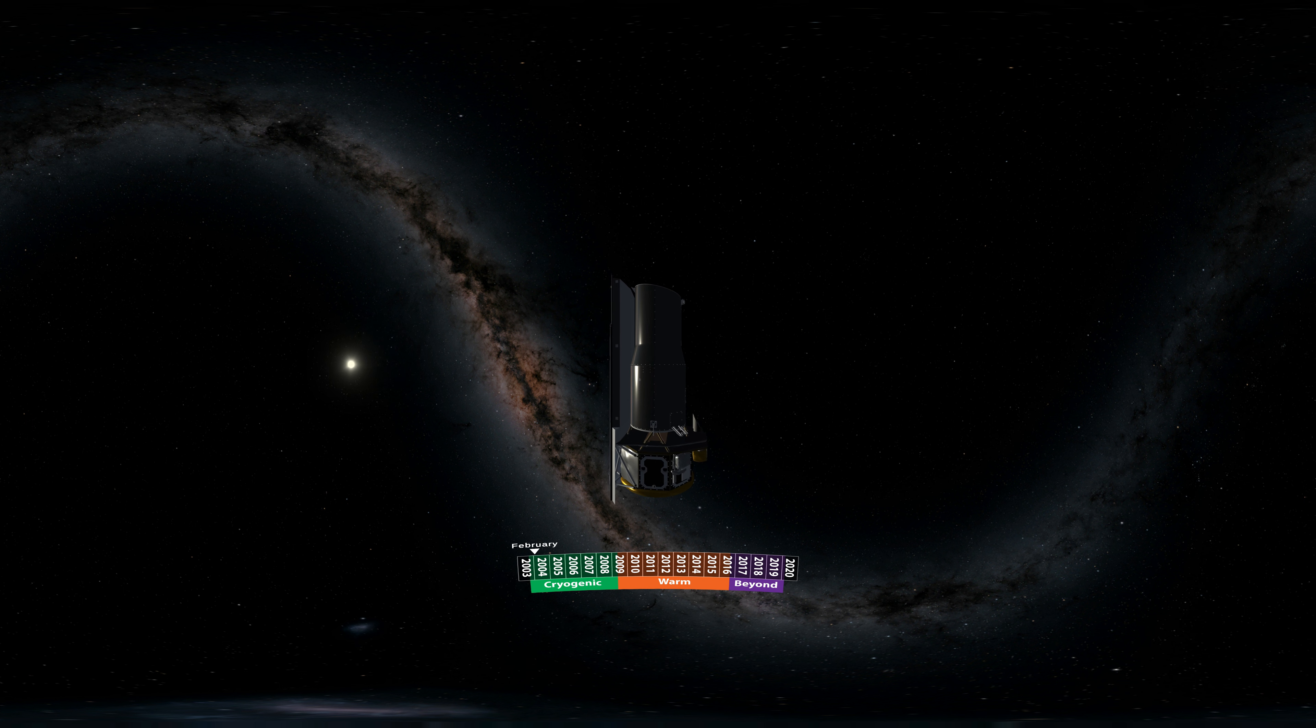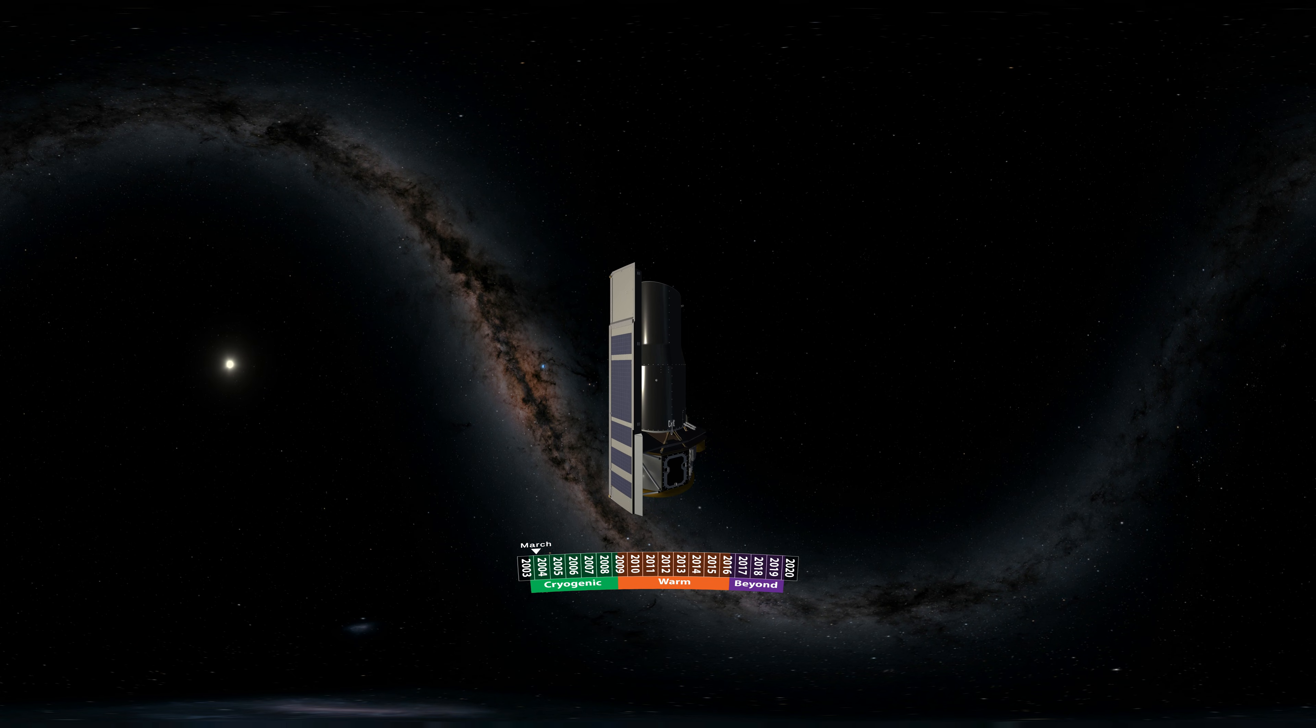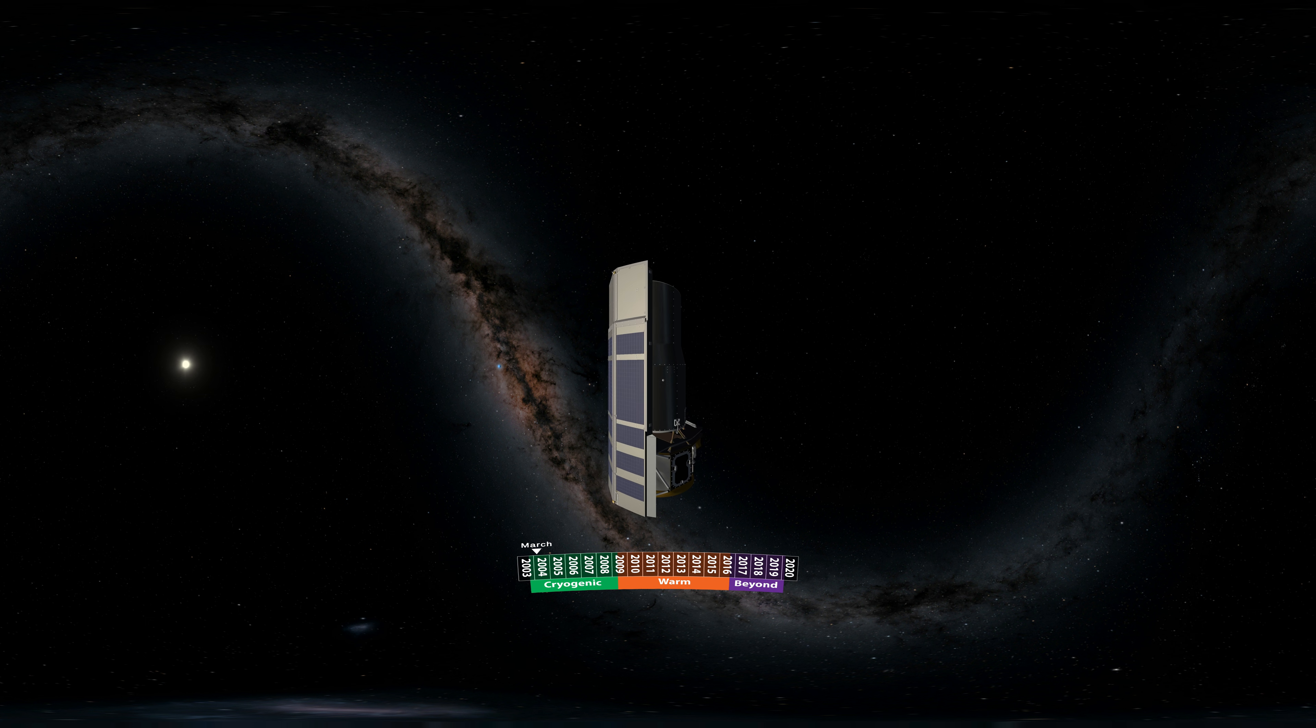Spitzer takes eight more days to complete its solar orbit than Earth does. That means that it trails ever farther behind Earth, which in our sky appears as a bright blue dot. As Earth grows more distant over time, it will become fainter and appear to shift closer to the sun.